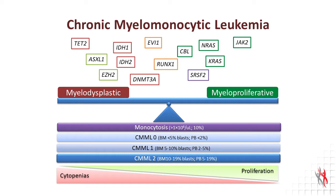Mutations in cell signaling pathway components like JAK2, NRAS, KRAS, and CBL confer a myeloproliferative biology. So inasmuch as these mutations happen simultaneously within a given patient's bone marrow, they confer either a myelodysplastic dominant CMML or a myeloproliferative dominant CMML.